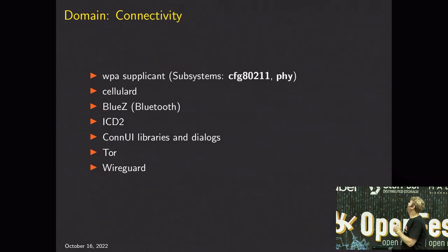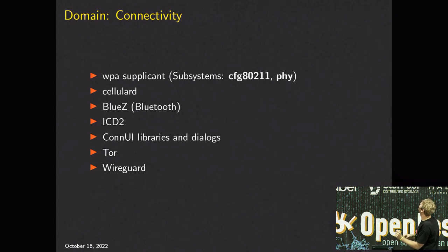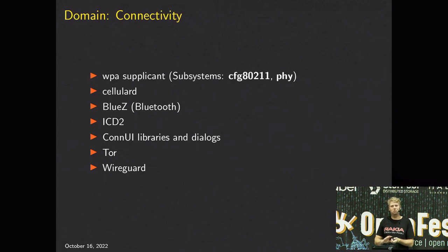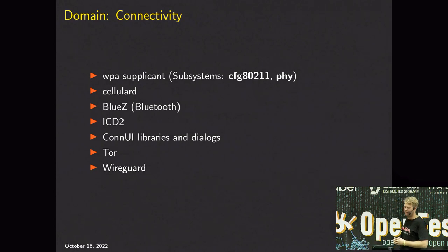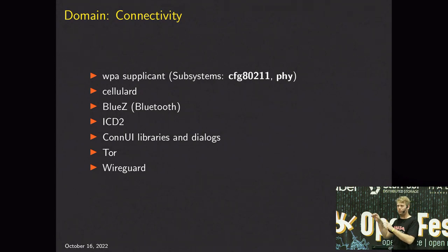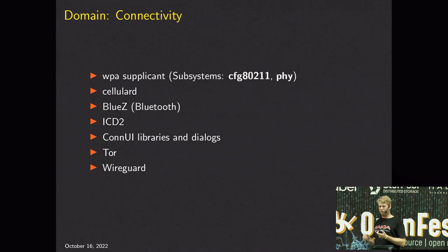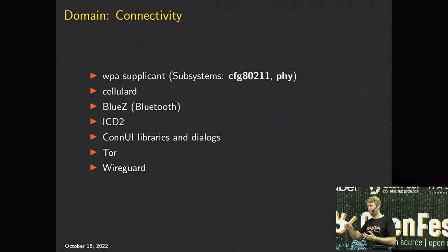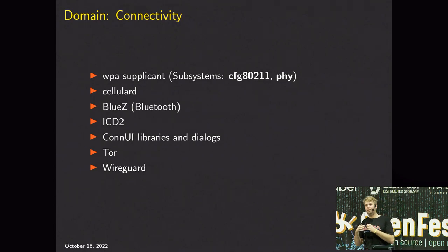Then there's the connectivity domain. WPA Supplicant is the program that interfaces with Wi-Fi - you probably have it on your laptop. It interfaces with the cfg80211 subsystem and the physical layer of the Linux subsystems, managing everything for your Wi-Fi: whether you're connected or not, what kind of Wi-Fi, the encryption, if you got the password wrong or right, if you got dropped from the network. It exposes all of this over D-Bus.